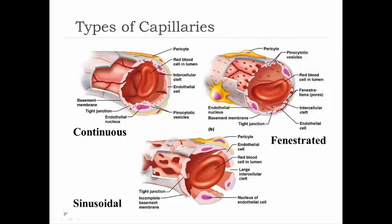Sinusoidal capillaries have huge intercellular clefts because they have very few tight junctions, and also have very large fenestrations. These are very leaky, allowing large molecules and even blood cells to pass through. We find these in the liver — where the capillaries are called sinusoids — as well as in the bone marrow, so newly made blood cells can exit, and in the spleen and adrenal medulla.